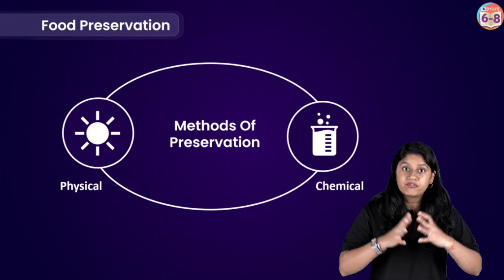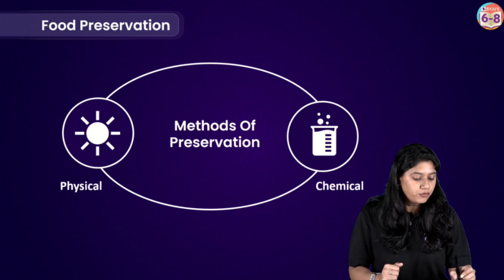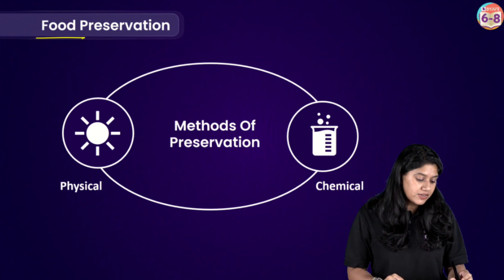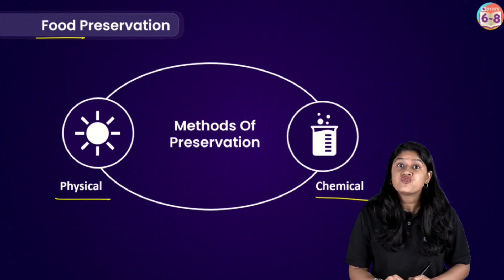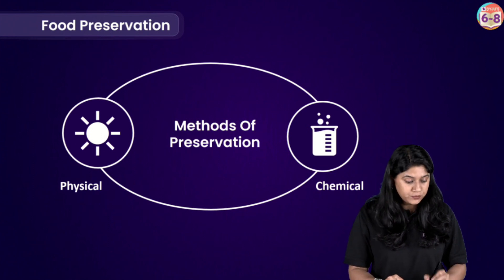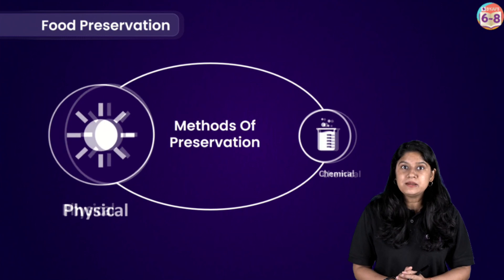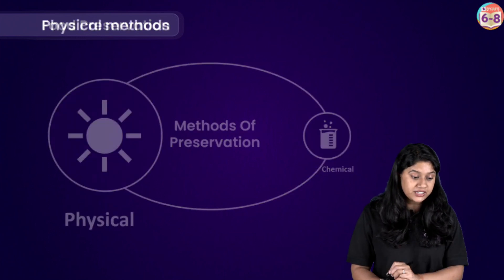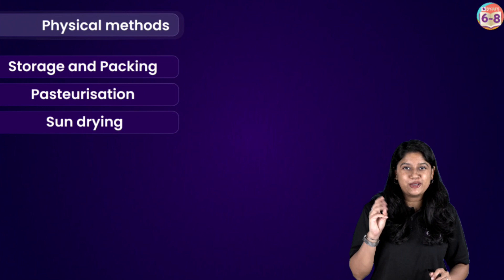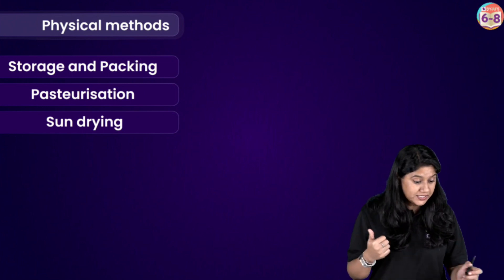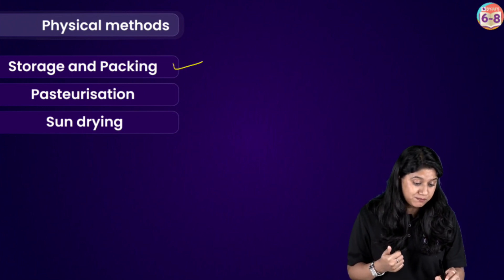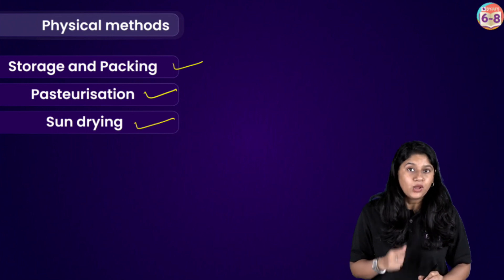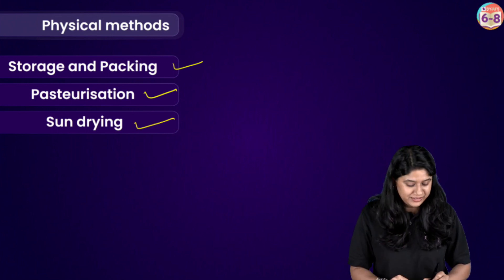Broadly we can divide food preservation under two important categories: physical and chemical. First we'll be discussing about the physical method of preservation. In this category we have three very important methods: storage and packaging, pasteurization, and sun drying. Let's tackle each one by one.